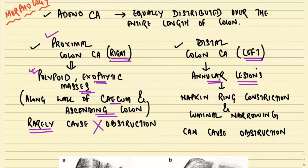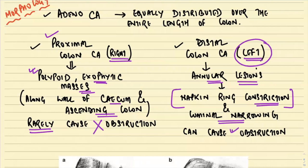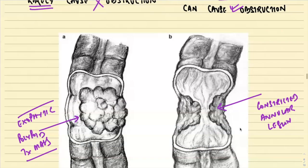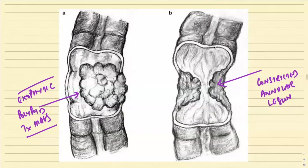Whereas the distal colon cancer growing on the left side is presenting as an annular constrictive lesion. This constriction is called a napkin ring constriction. It leads to narrowing of the lumen and can very much cause obstruction. This is seen basically in the distal colon lesions.